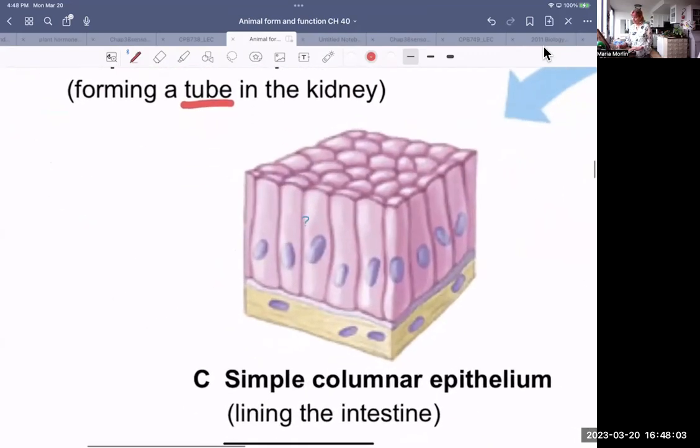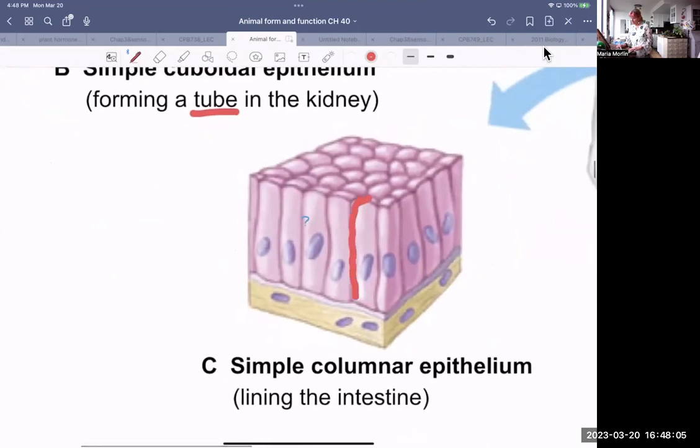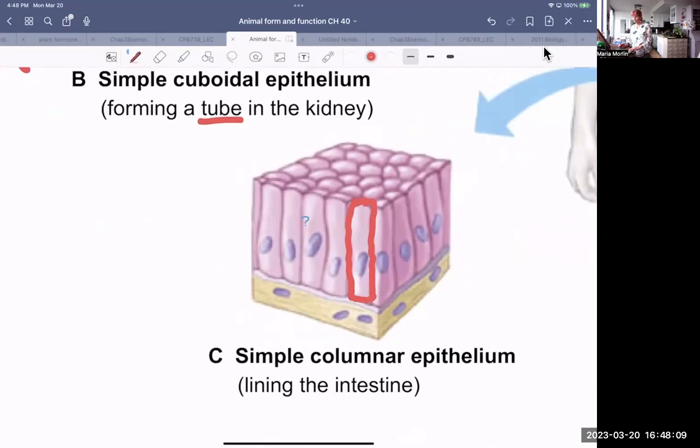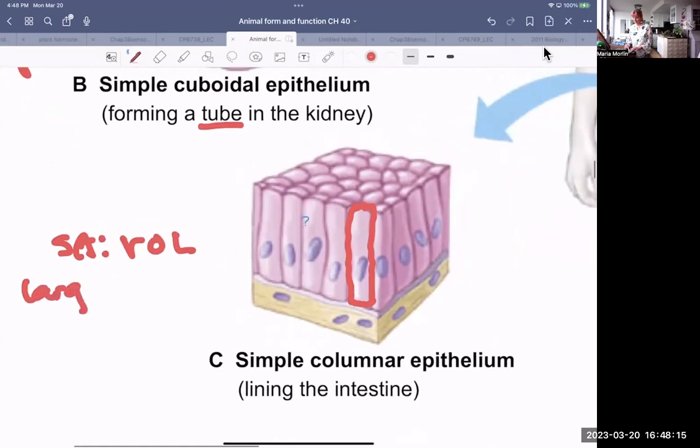Columnar tissue is column-shaped. So it's long and skinny. And as such, it has more surface area to volume ratio. Therefore, there's a lot of surface area for exchanging material. You find this kind of tissue lining things like the intestines, which need to absorb nutrients.